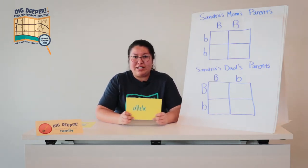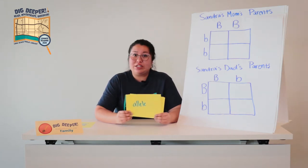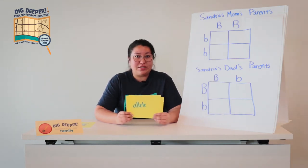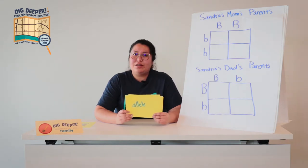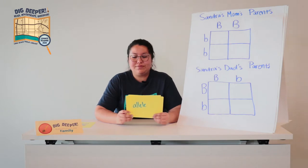Alleles are a part of your DNA that can determine what traits are shown. So there are different alleles for brown eyes, blue eyes, and green eyes — just like ice cream flavors. There's chocolate, vanilla, mint chocolate chip, but it's still ice cream.